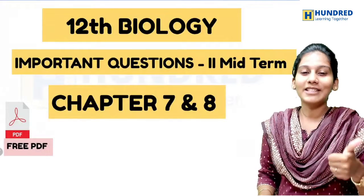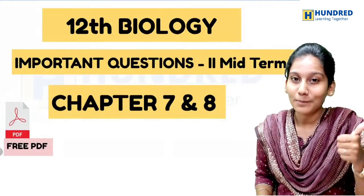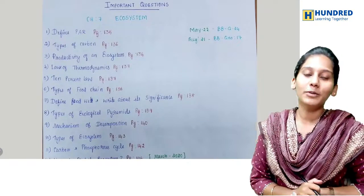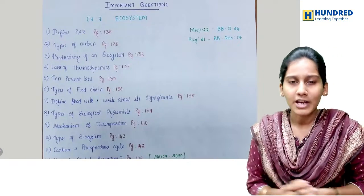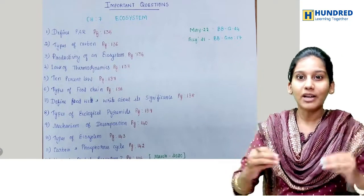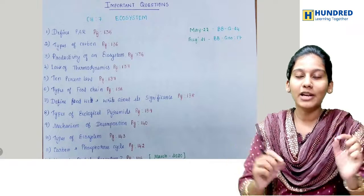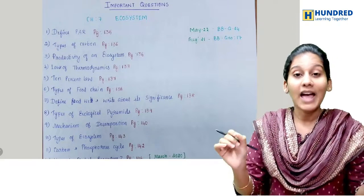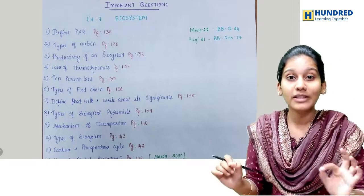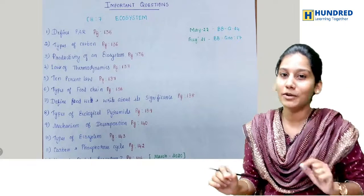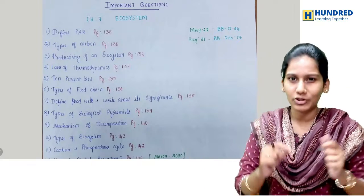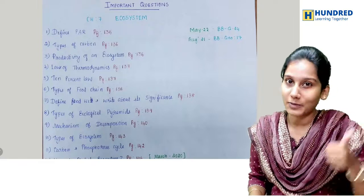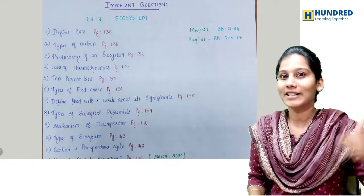So just start with the important questions from Chapter 7, that is going to be the Ecosystem chapter. In the PDF, the previous years' mark questions are included. The first question is PAR — so if you want, comment below.